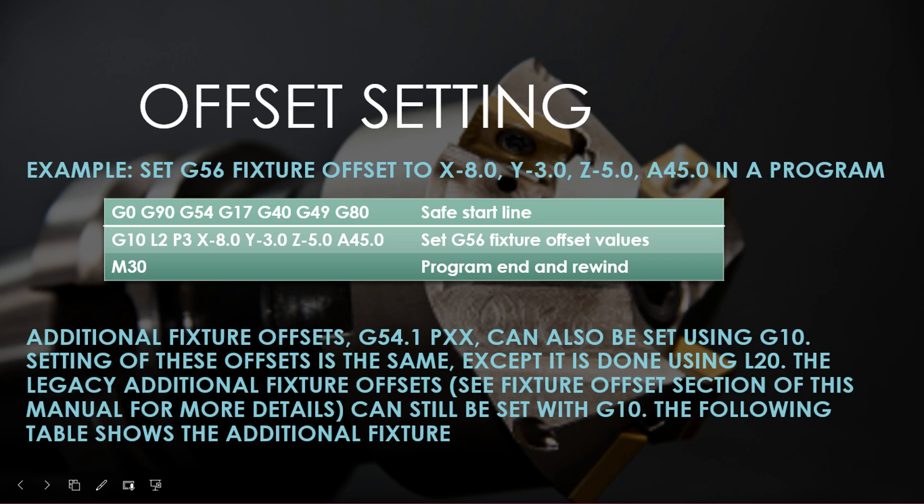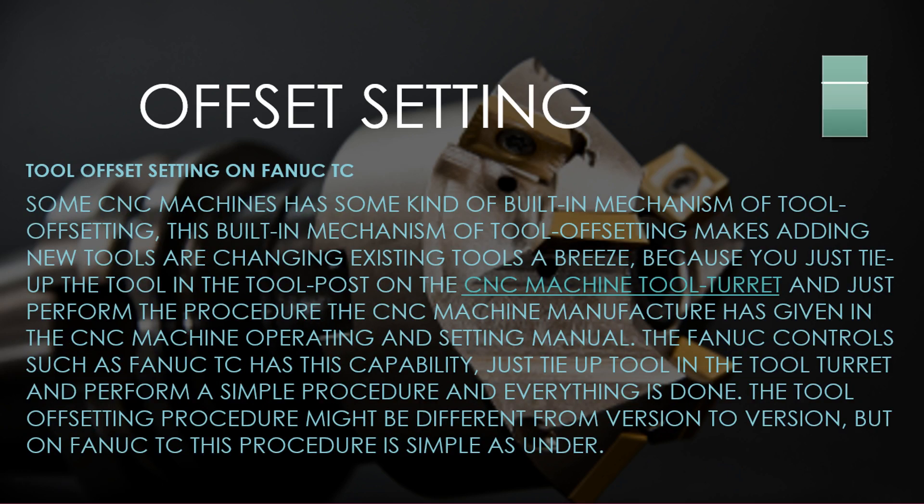Setting of these offsets is the same, except it is done using L20. The legacy additional fixture offsets — see the fixture offset section of this manual for more details — can still be set with G10. The following table shows the additional fixture and tool offset settings on FANUC TC.